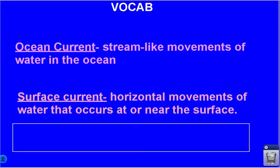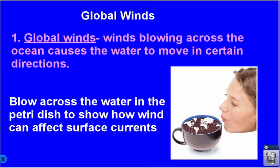An ocean current itself is a stream-like movement of water in the ocean. We're going to be focusing on surface currents for the first part — the horizontal movements of water that occur at or near the surface, so a couple hundred meters deep in the ocean. There are three main factors that affect surface currents, and the first one is global winds.